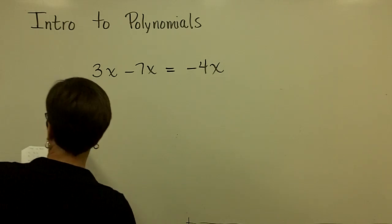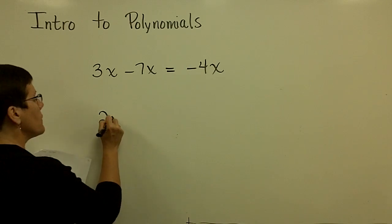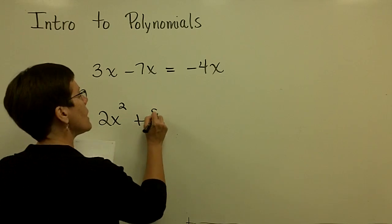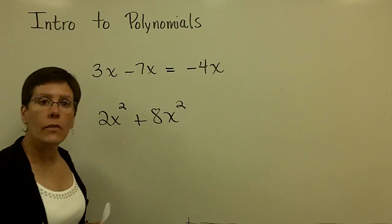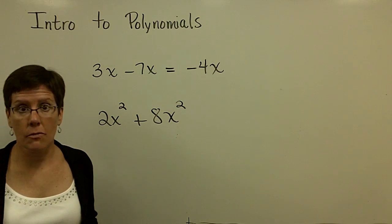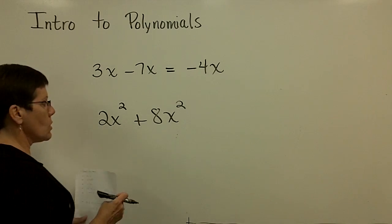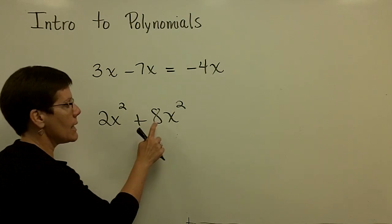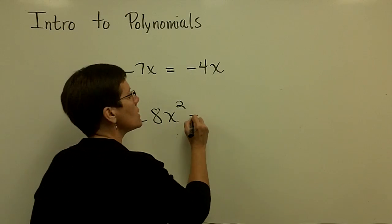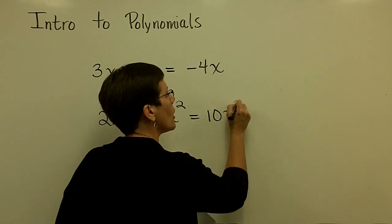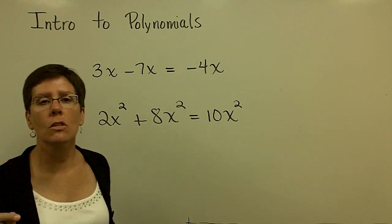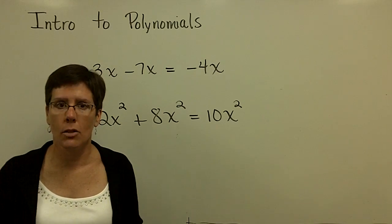The next example, 2x² + 8x². These two are like terms as well because the variable is the same and it's raised to the same power. So we have 2 of these and 8 of these for a total of 10 of those. Don't do anything with the variable raised to the power. You are just adding or subtracting their coefficients.